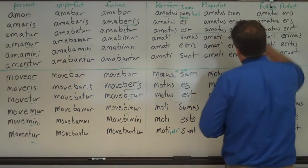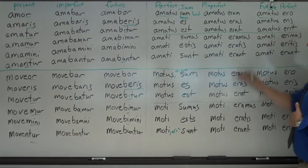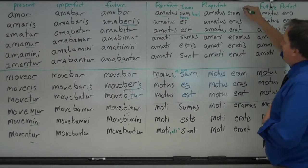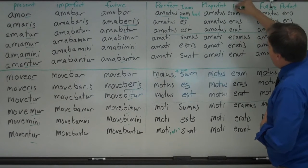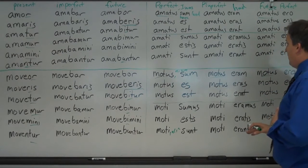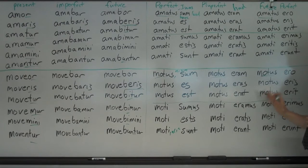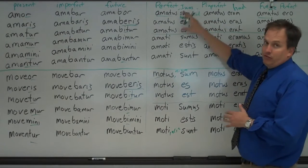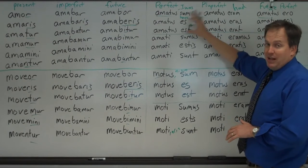And then for the pluperfect, we use eram, eras, erat, for both, all the way through. And this would be amatus eram, I had been loved. Amatus eras, you had been loved. Same thing with motus eram, I had been moved. Motus eras, you had been moved. Not have. Have is the perfect. So put have over here. Make sure you put these down. Put a big note: have here.